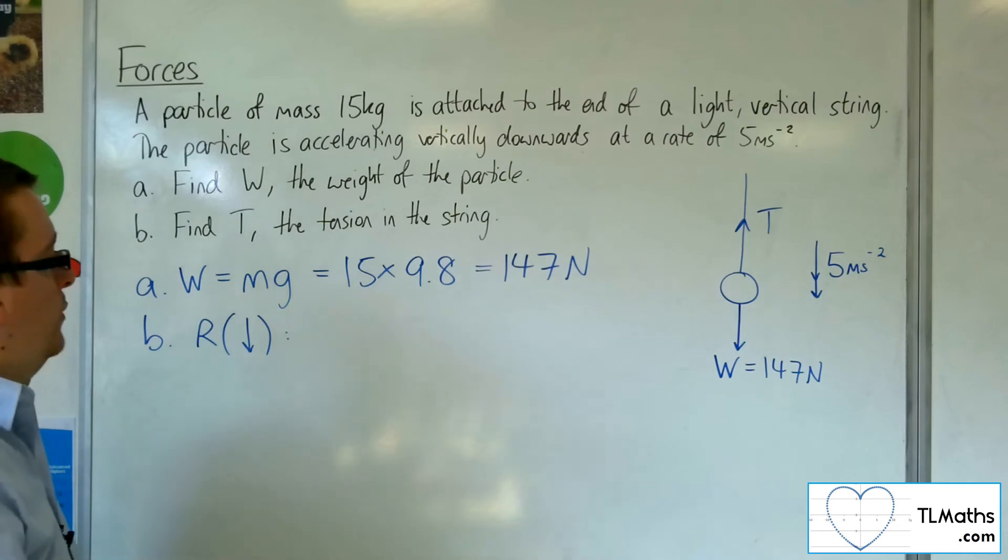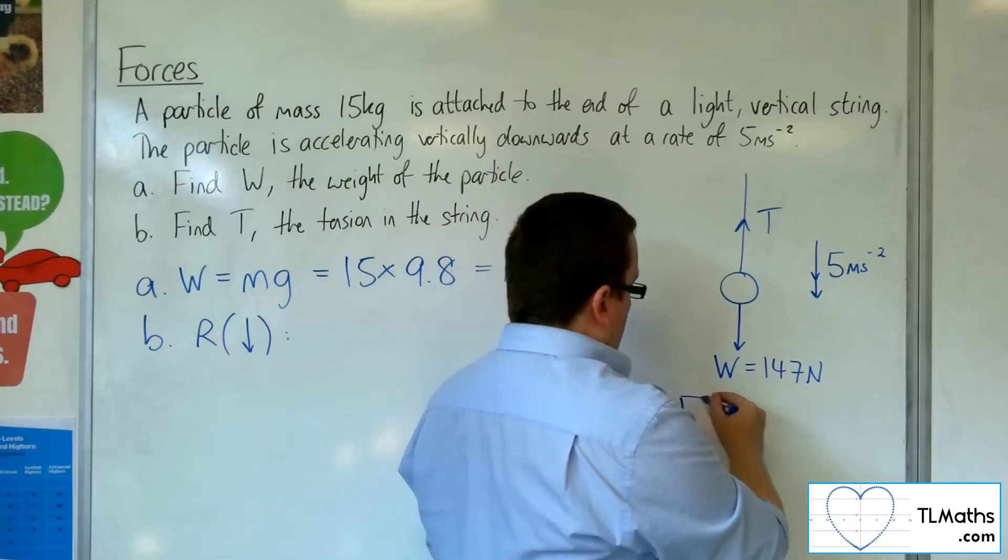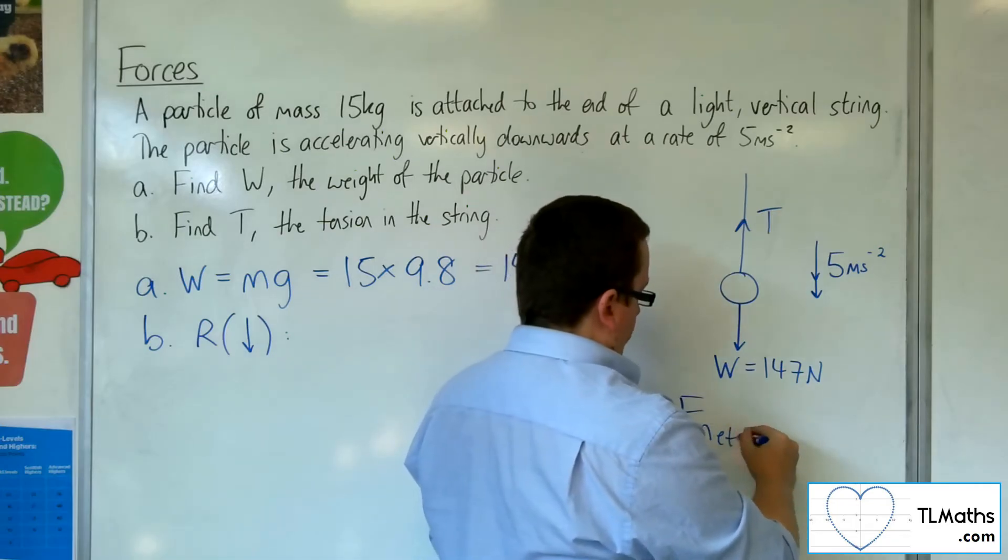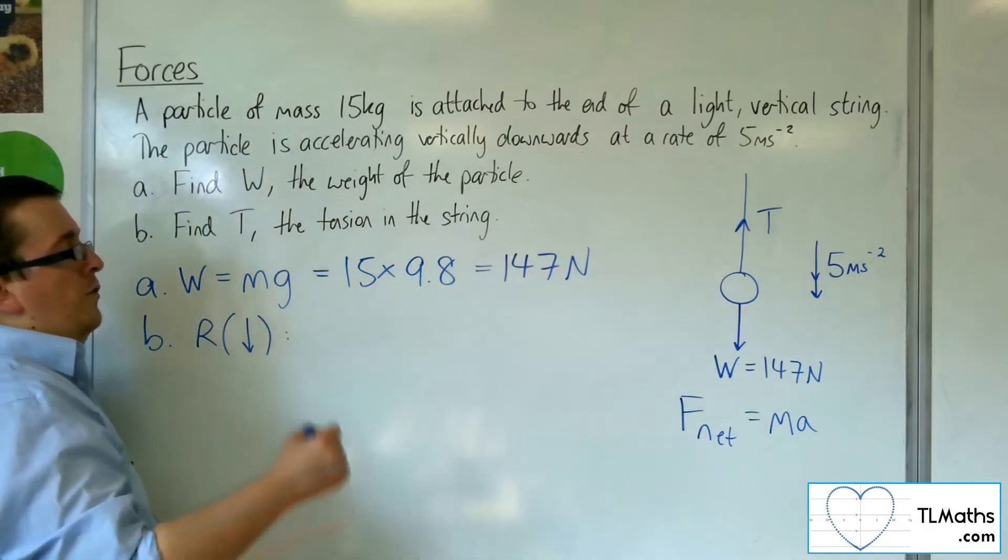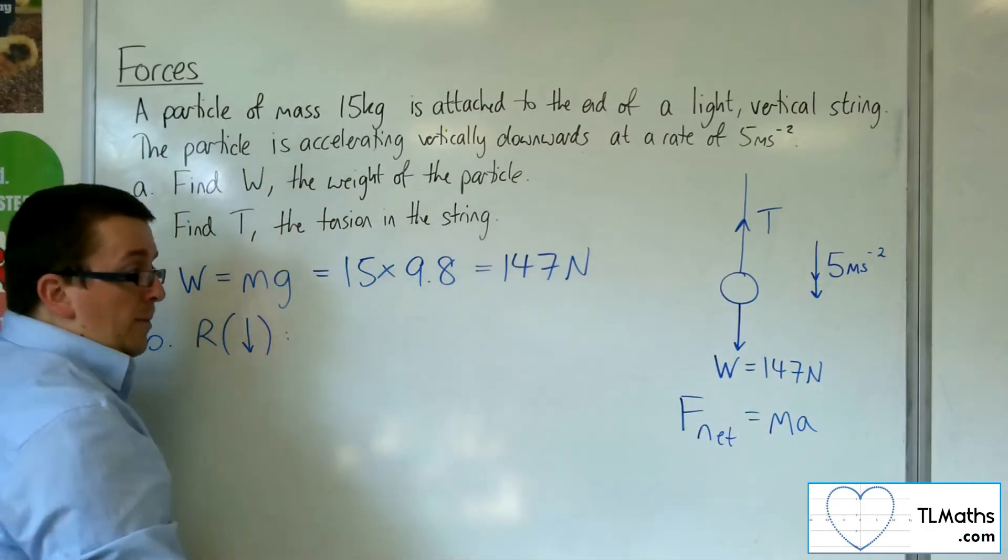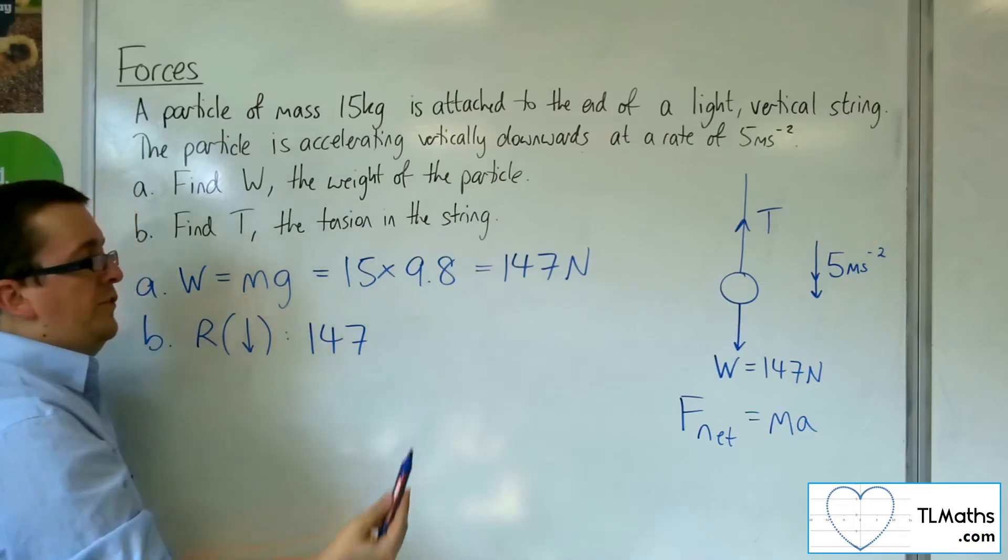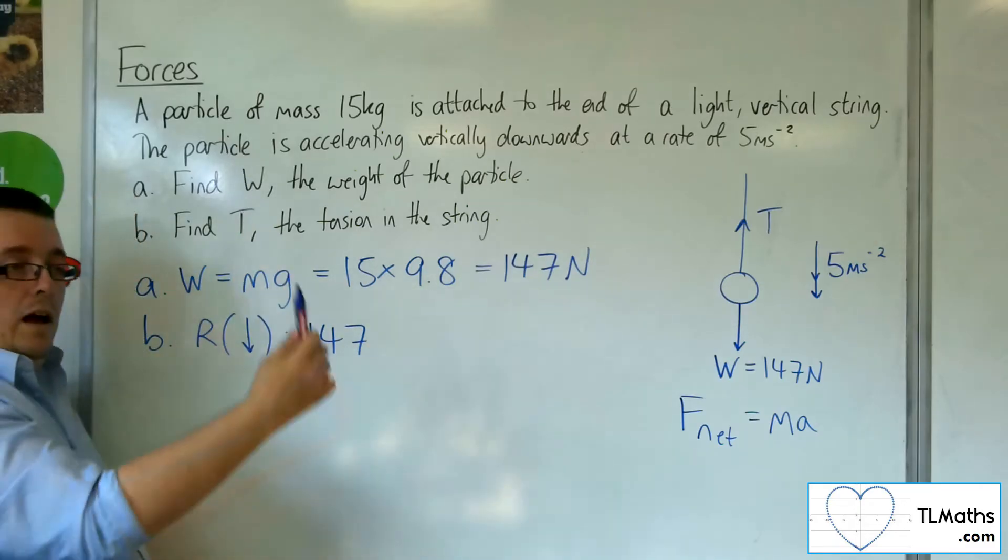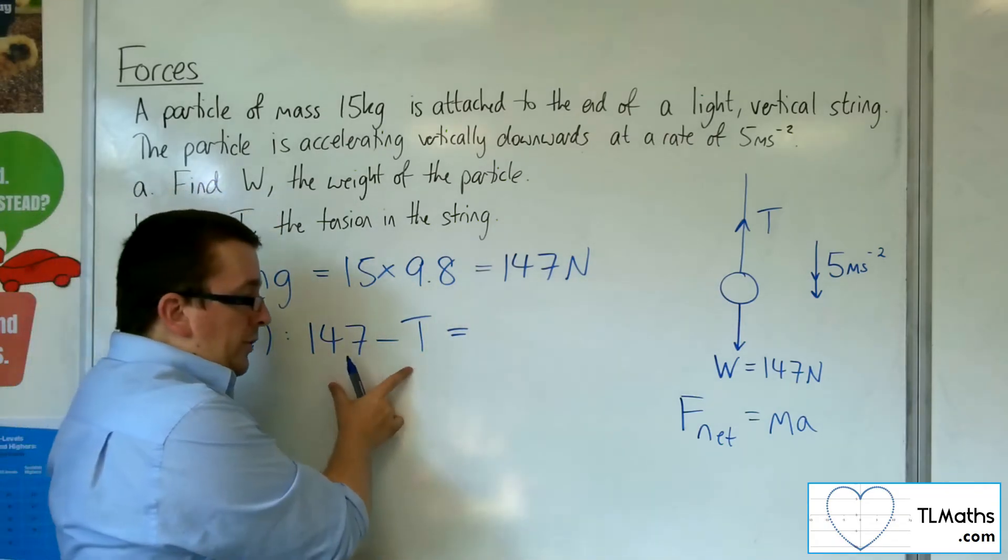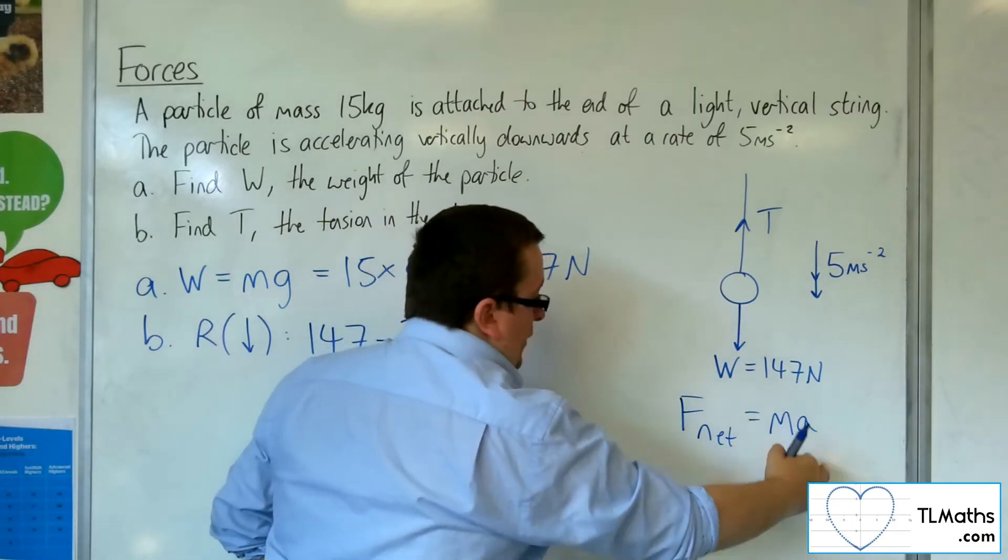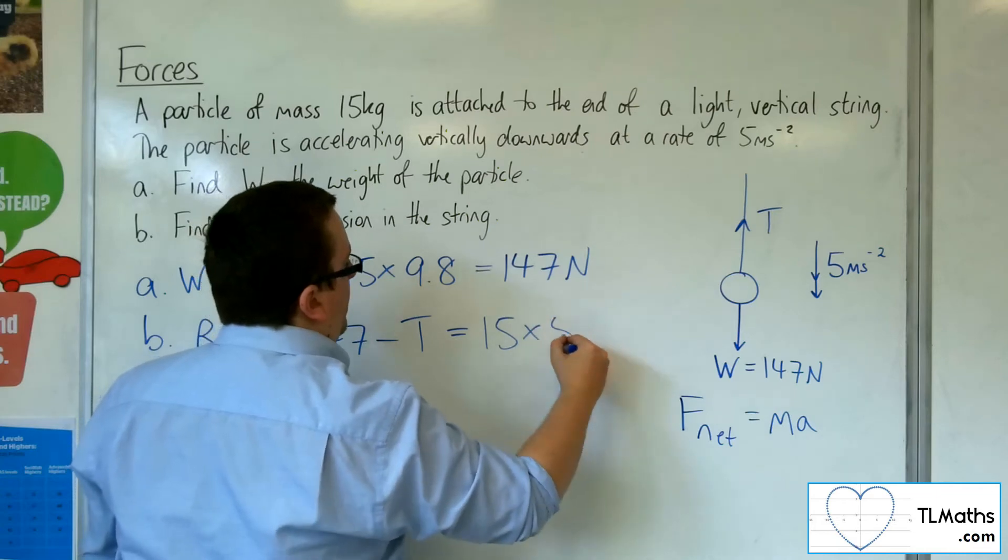This utilizes our F equals MA. The forces acting on the particle: we've got W working directly downwards, we've got T working upwards. That's the net force, which is equal to mass times acceleration. The mass was 15, the acceleration is 5.